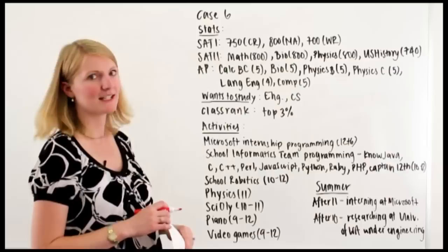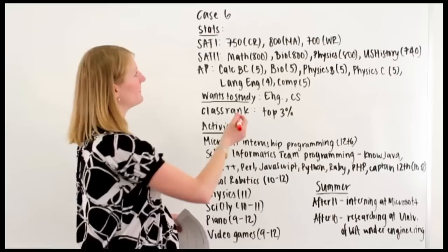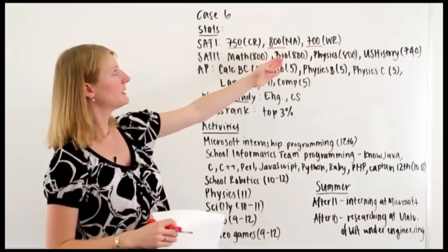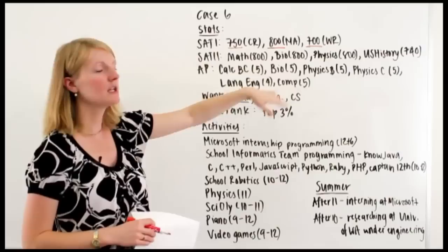So on the SAT-1, he got a 750 on writing, 800 on math, 700 on the reading, and then 700 on the writing. This indicates to me that this is a really strong math student, certainly still strong in writing and reading, but not quite as strong. So maybe a little lopsided, which is perfectly fine.